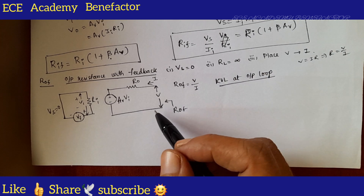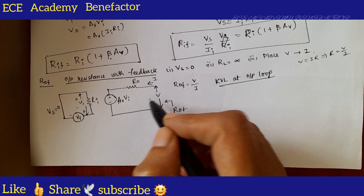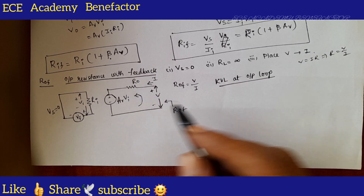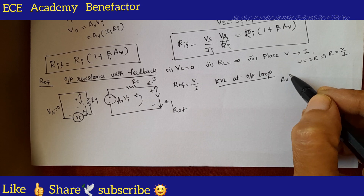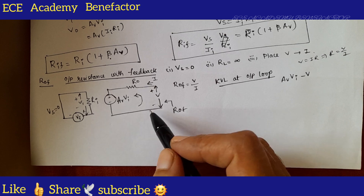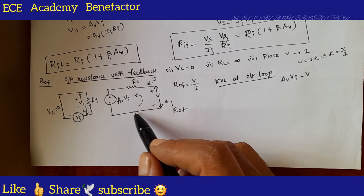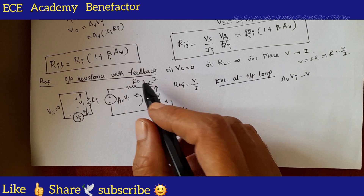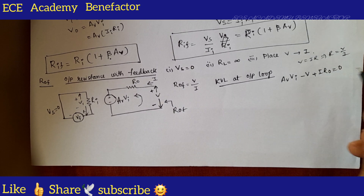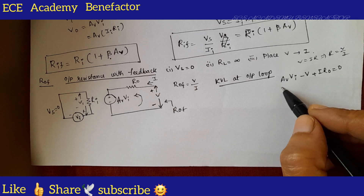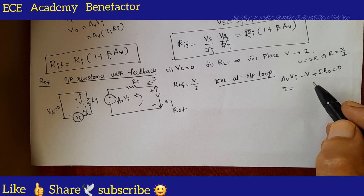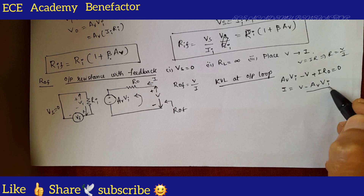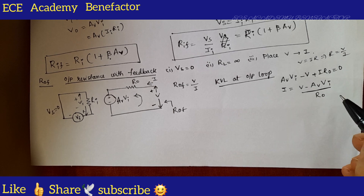Now write the KVL at the output loop, traversing in the chosen direction. You are entering at plus A V V i, then minus V, and the voltage drop across R naught is i R naught, giving the equation: A V V i minus V plus i R naught equals zero. Rearranging, i equals V minus A V V i, all divided by R naught.